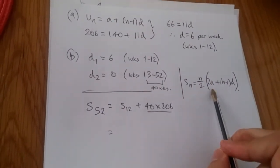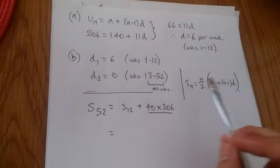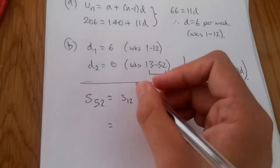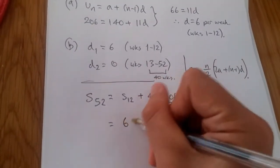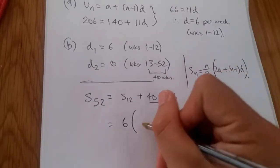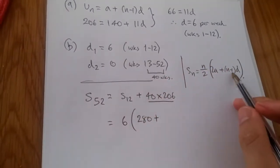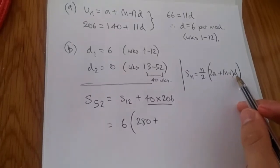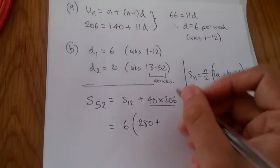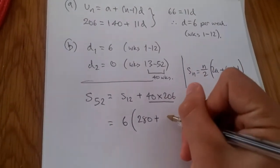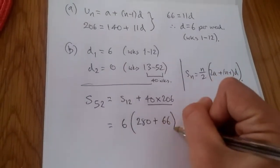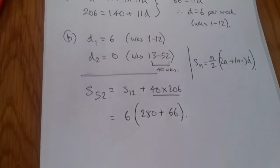We know what A is. A is 140, D is 6, and N in this case is 12. So we're going to have 12 over 2 is 6. 2 times 140 is 280 plus N minus 1 times D. So 11 times D. So it would be 11 times 6 would be 66. Okay, not bad.